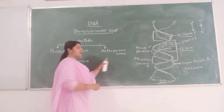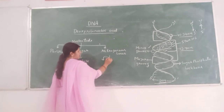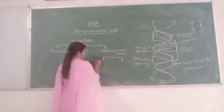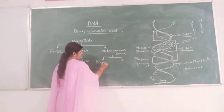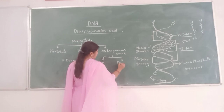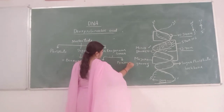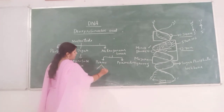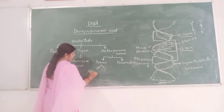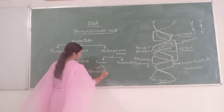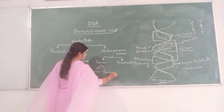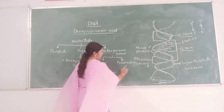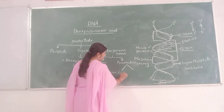Nitrogenous bases are of two types: purine and pyrimidine. Purine consists of adenine and guanine. And pyrimidine consists of cytosine and thymine.